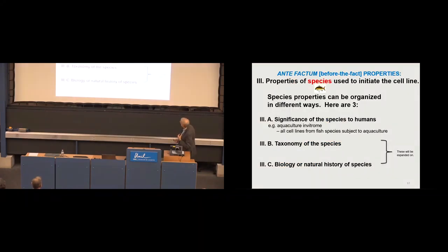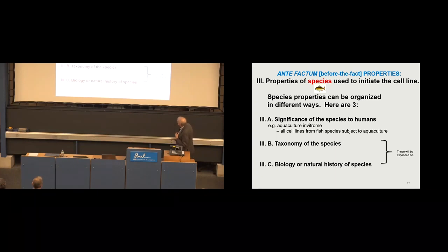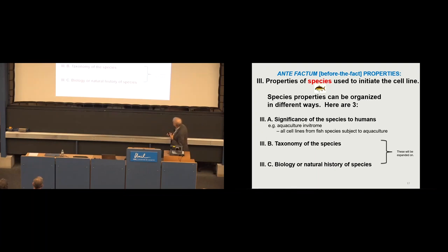And then now I can go to the properties of the species. So what are the species used to initiate the cell line? And I'm going to divide this in three different ways. One is the significance of the species to humans. So you could have the aquaculture invitrome: all the cell lines from species subject to aquaculture, or the endangered fish invitrome. So people often develop cell lines because they say, hey, this fish is endangered and wouldn't it be great to have some resource around to study it further? But I won't say anything more about those. What I want to talk about are the taxonomy of the species and the biology or natural history of the species.